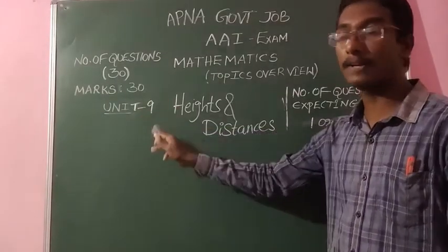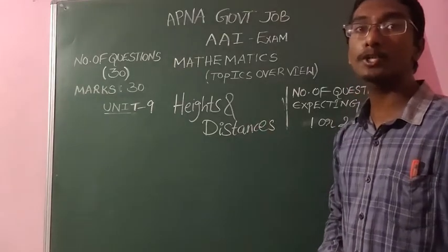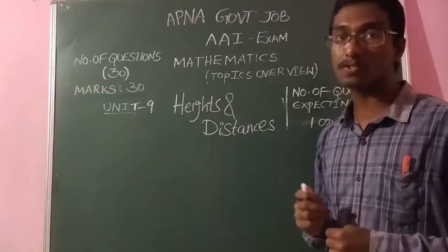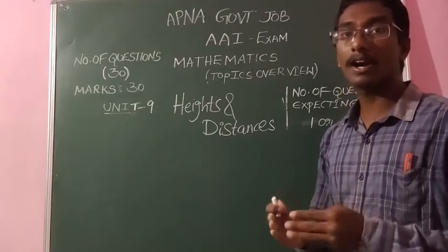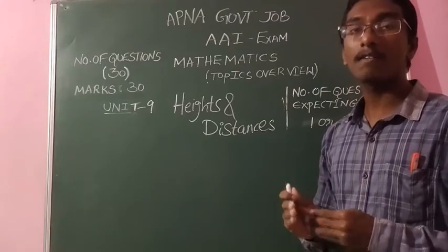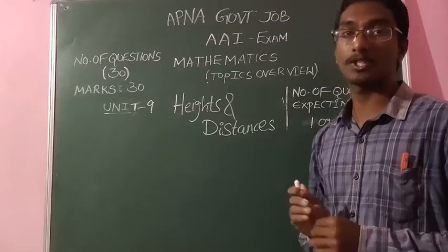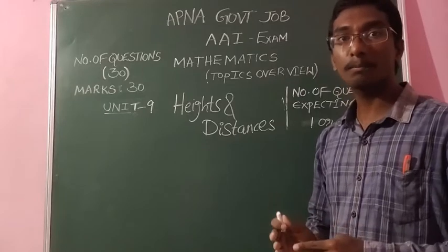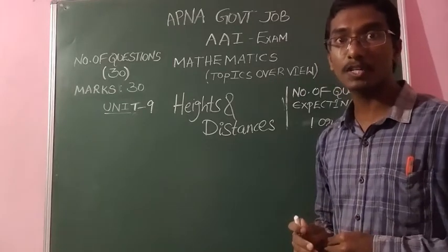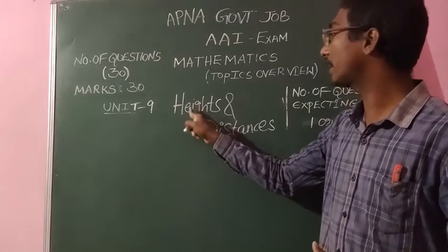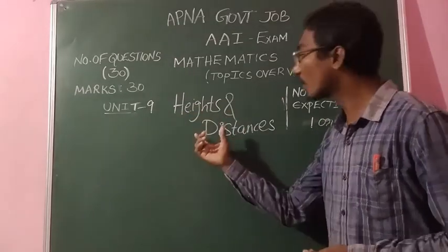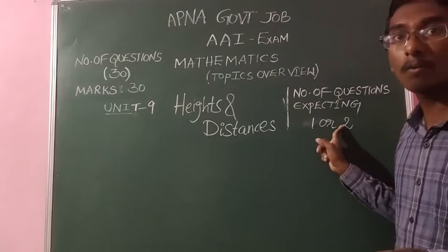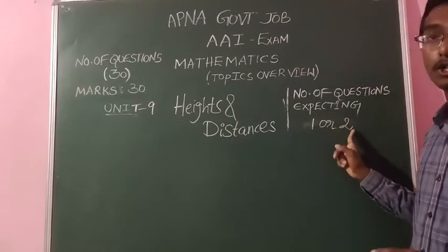The last unit, Unit 9, is Heights and Distances, related to trigonometry. In this unit, we learn trigonometric ratios and formulas, standard values for certain angles, identities, compound angles, multiples, submultiples, transformations, and applications of trigonometry including heights and distances. There is a chance to ask at least one question, and sometimes two questions from this unit.